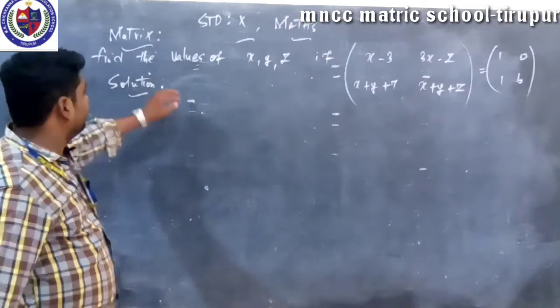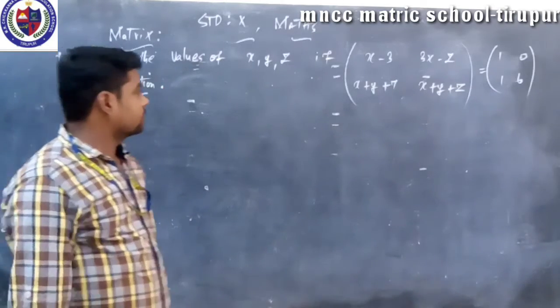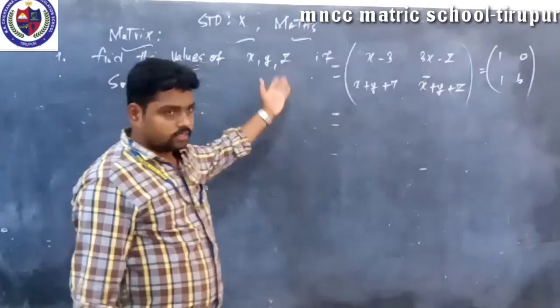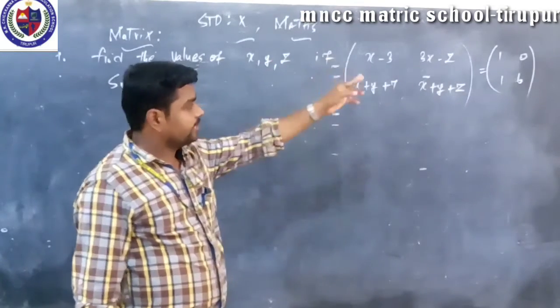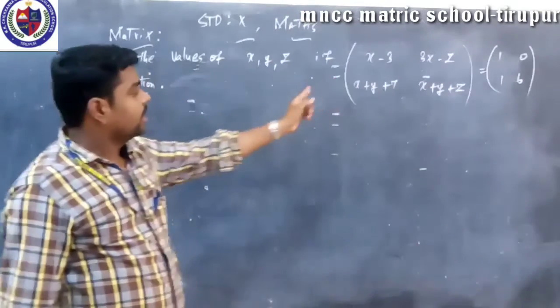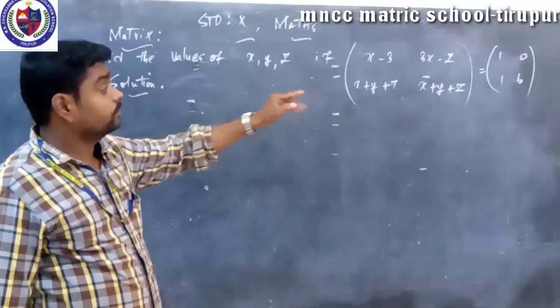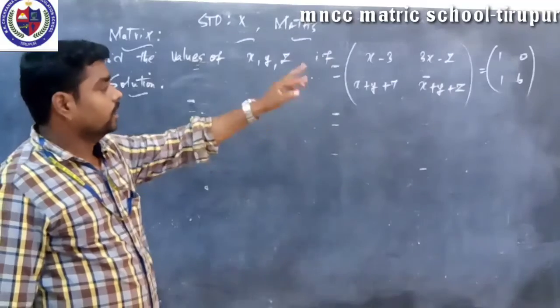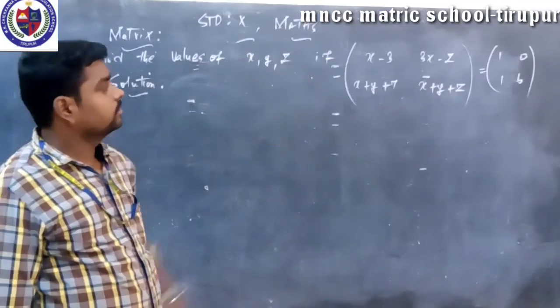Hi students. Next one: find the value of x, y, z if x minus 3, 3x minus z, x plus y plus 7, x plus y plus z equal to 1, 0, 1, 6.